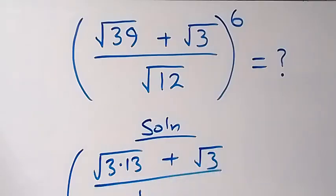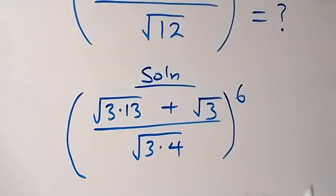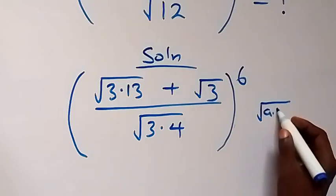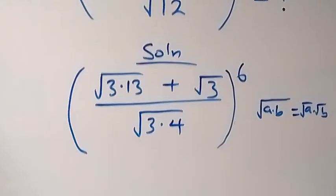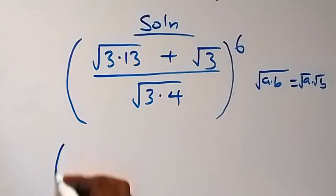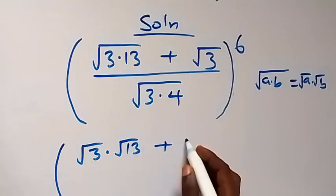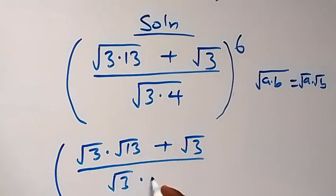Divided by, we have root 12 and we can write it as root 3 times 4, then raise to power 6. From here, in this bracket we can separate it — when we have root(a times b) this can be written as root a times root b. Then this becomes, in bracket, root 3 times root 13, then plus root 3, divided by root 3 times root 4, raise to power 6.